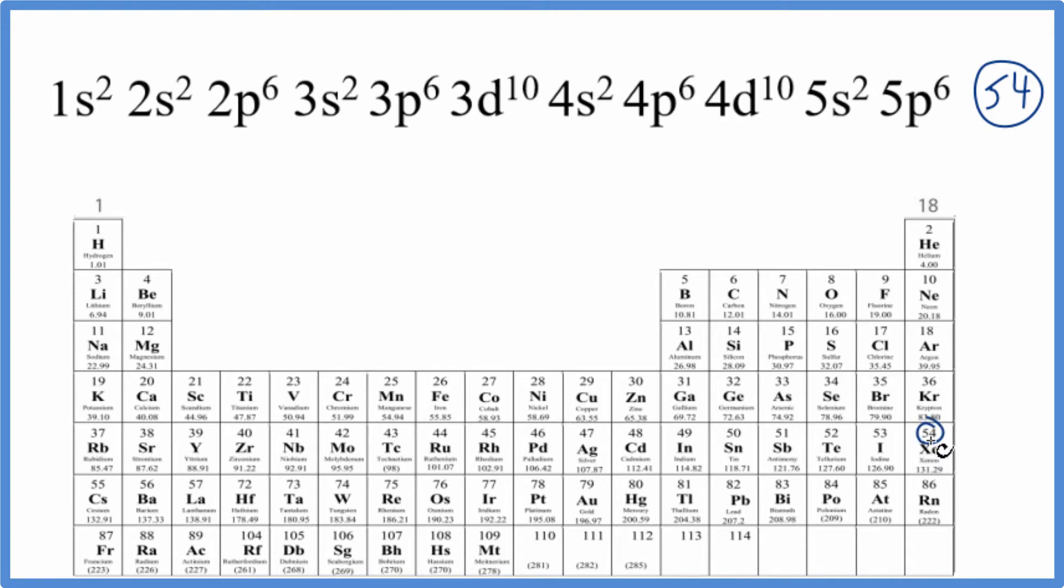This atomic number tells us the number of protons. So we're looking for something here. 54 has 54 as its atomic number. That means it'll have 54 electrons, just like we found. And here it is, xenon.